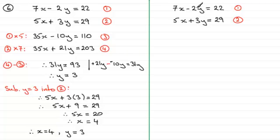I could bring them up to a number that both 2 and 3 go into, and preferably the lowest number they go into, and that would be 6. All I've got to do is multiply this top equation by 3 to bring this up to 6y, and multiply this second equation by 2 to bring it up to 6y.